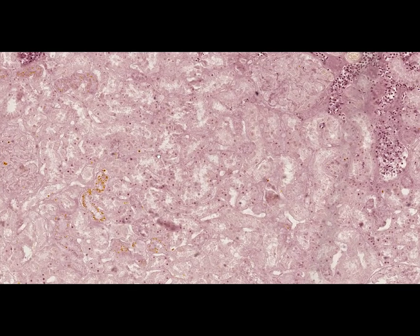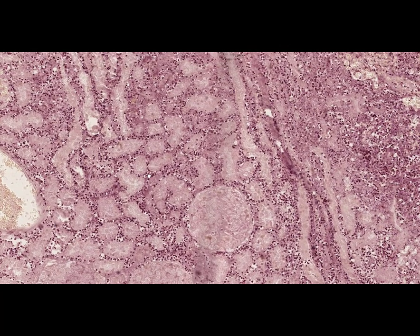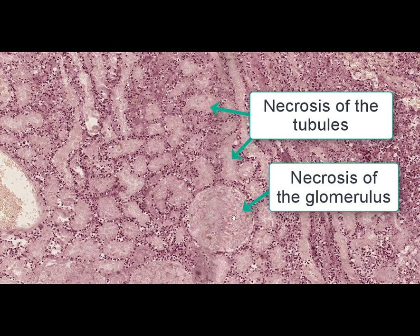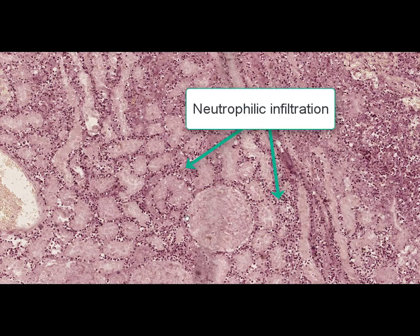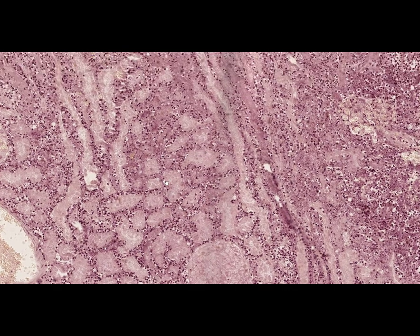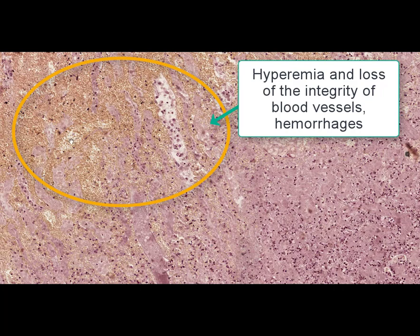In the second zone, the zone of demarcation inflammation, we can find necrobiotic changes of the glomeruli and tubules surrounded by numerous neutrophils, which is typical for necrotic changes. In the third zone, along with necrotic changes, we can find very pronounced hyperemia of the microvascular bed and lesions of the vessels with hemorrhages into the surrounding tissues. Growth of connective tissue at the site of necrosis, which is organization, is considered the most favorable outcome of kidney infarction.